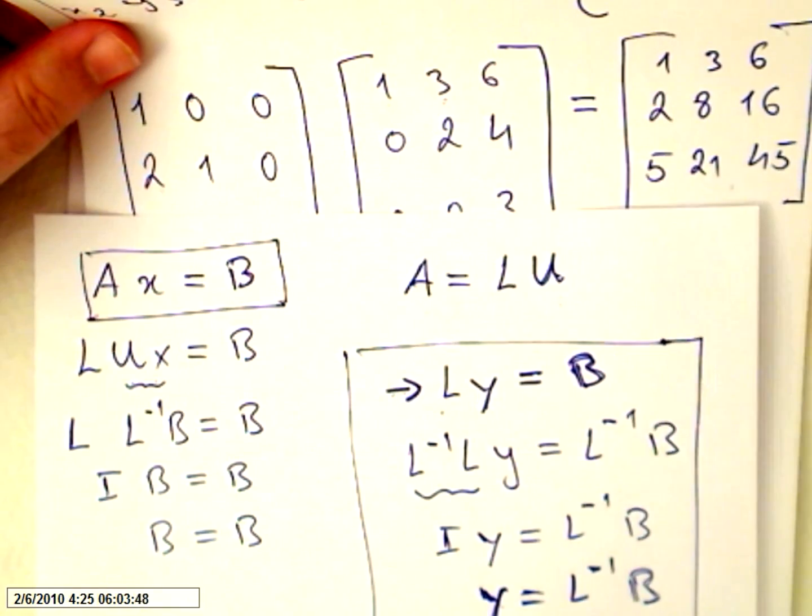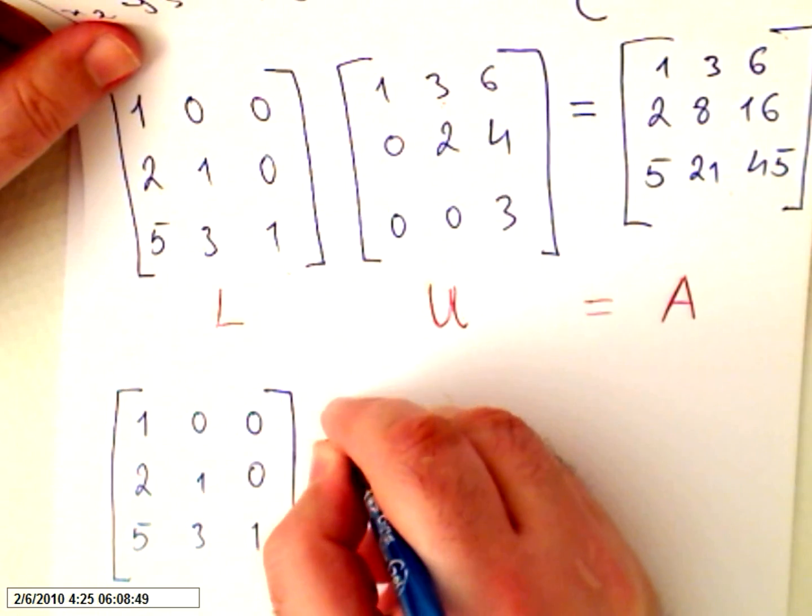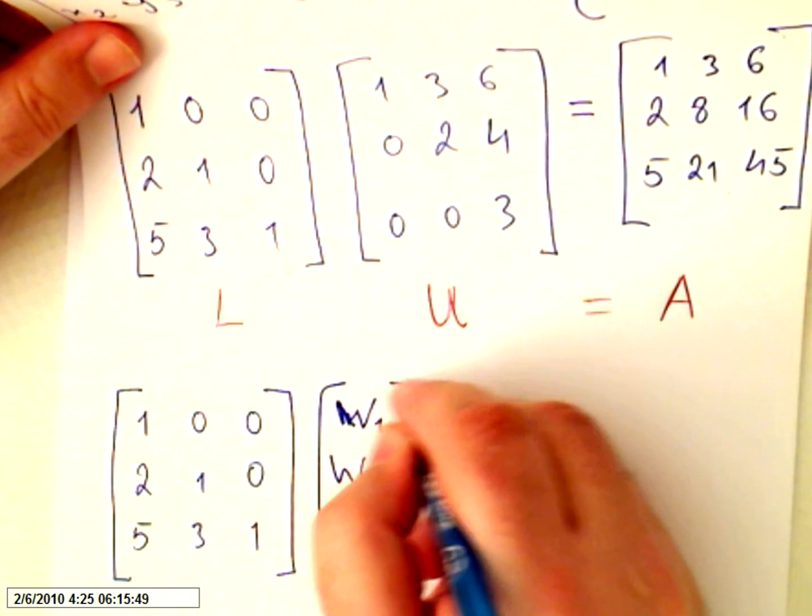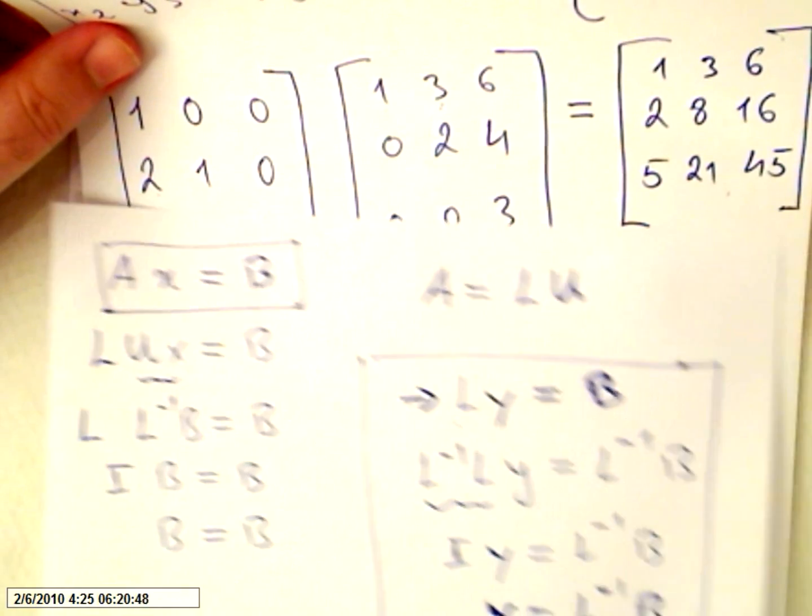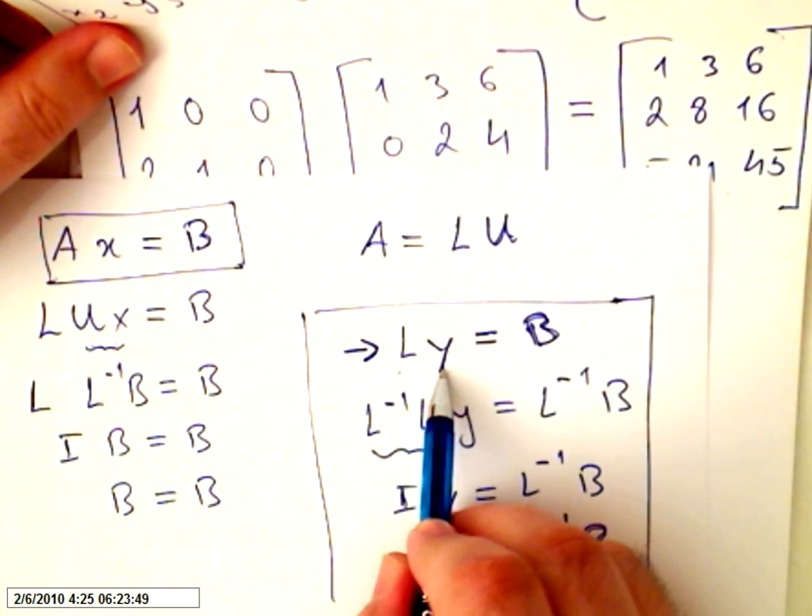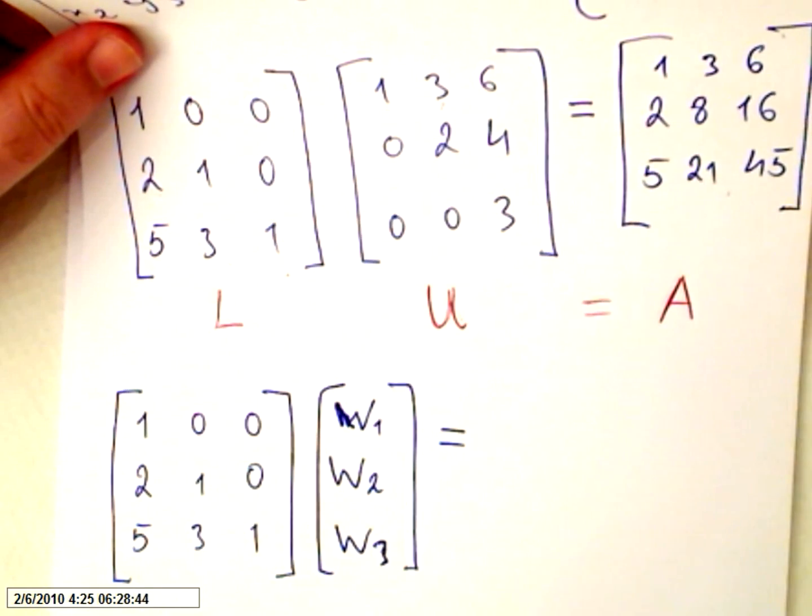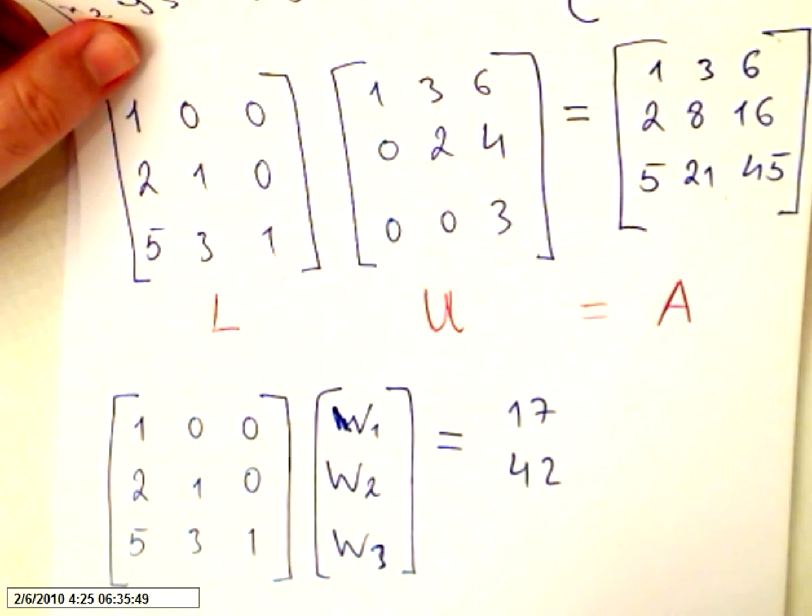Now y will be new variables, so y1, y2, y3. And we need b. So what was b in our original matrix? It was 17, 42, and 91.